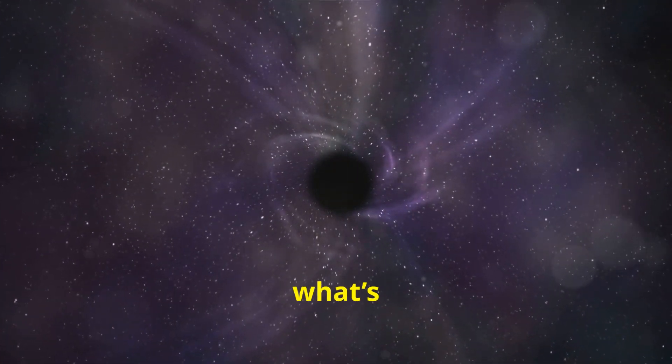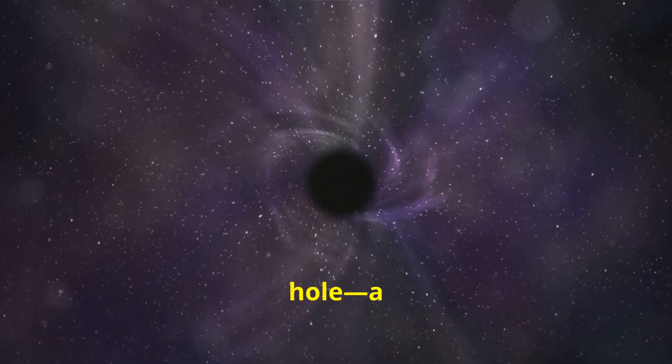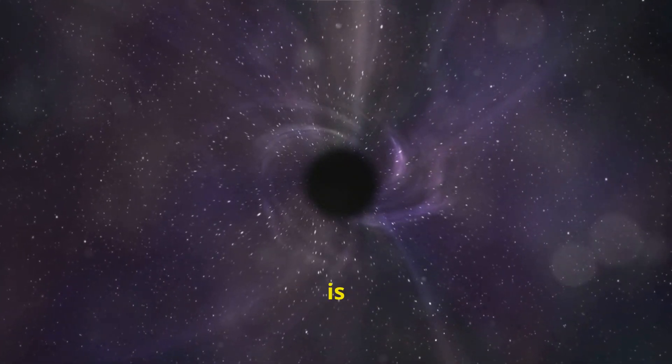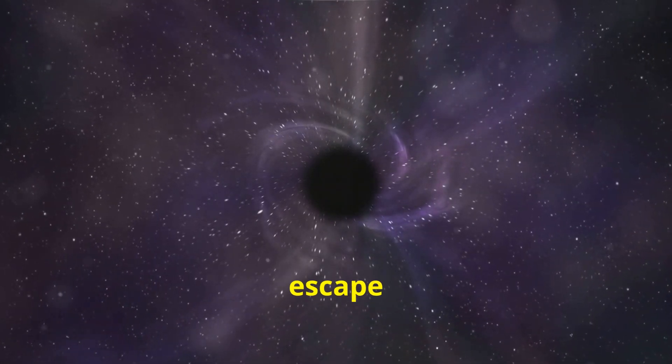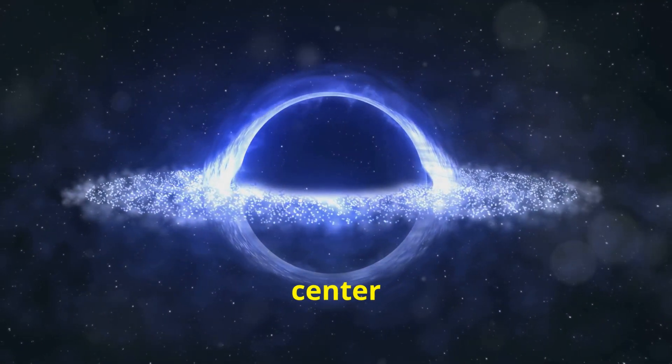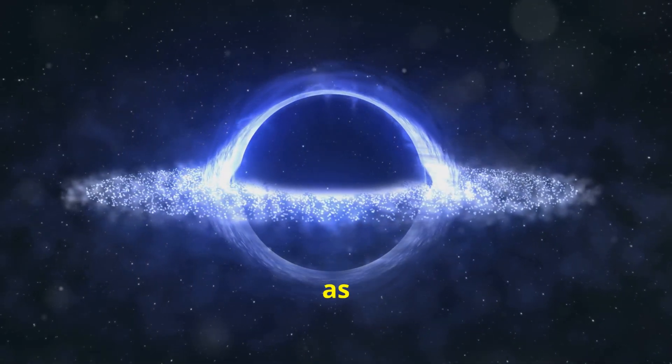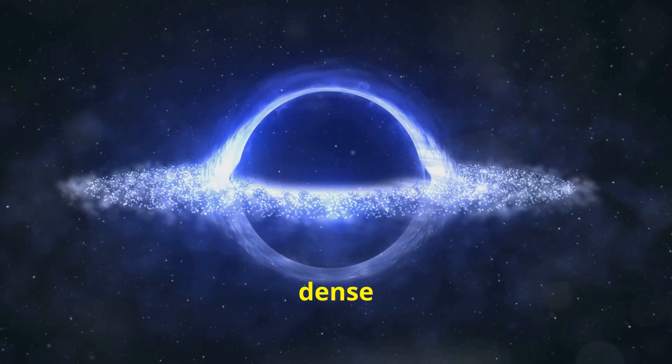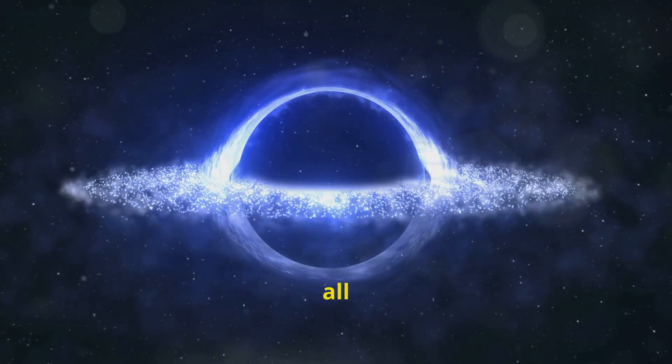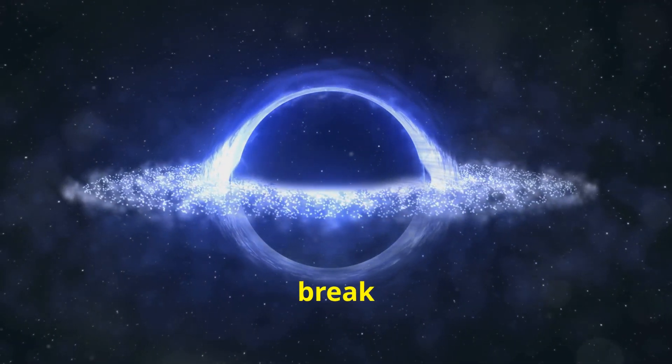If the star is large enough, what's left behind is a black hole, a region of space-time where gravity is so strong that nothing can escape it. Inside, at the centre of a black hole, is what's known as a singularity, a point that is infinitely dense and infinitely small, where all conceptions of time and space break down.